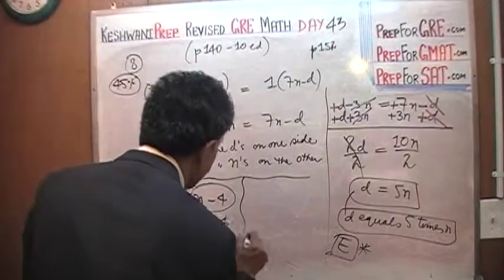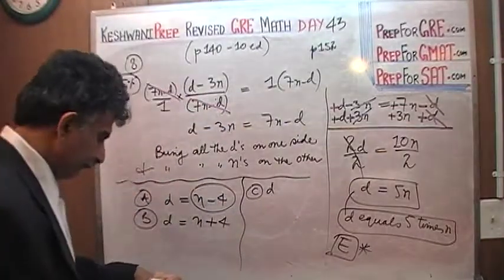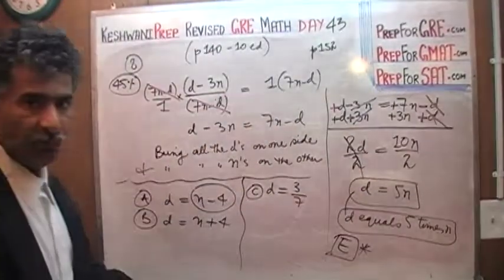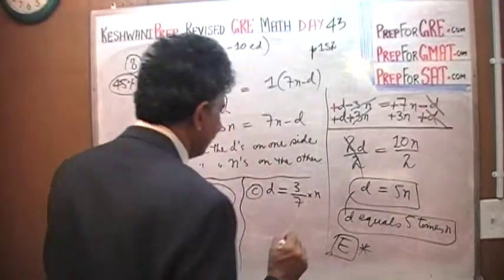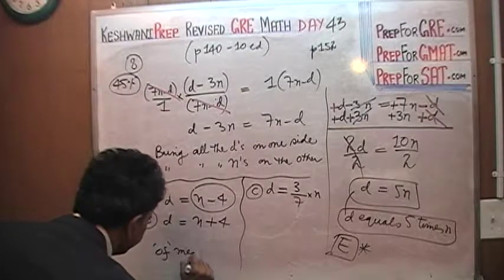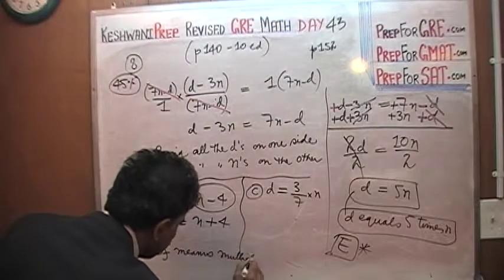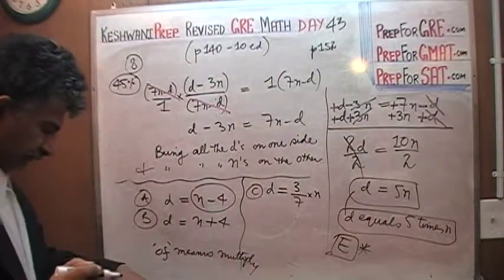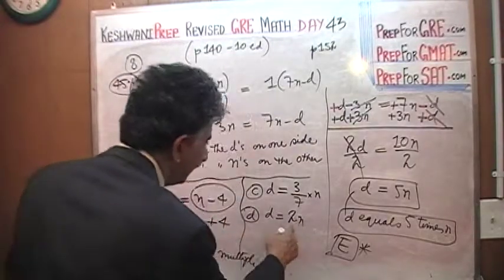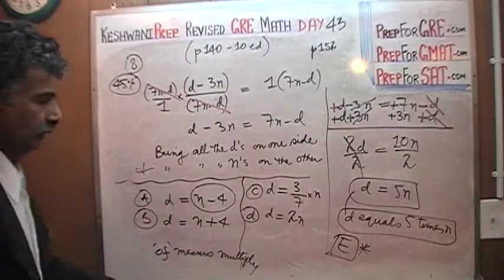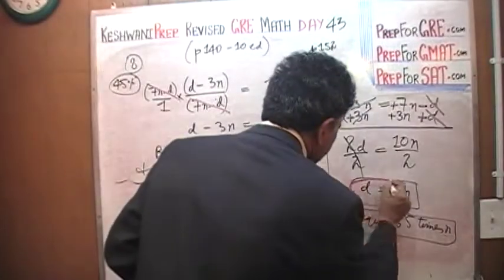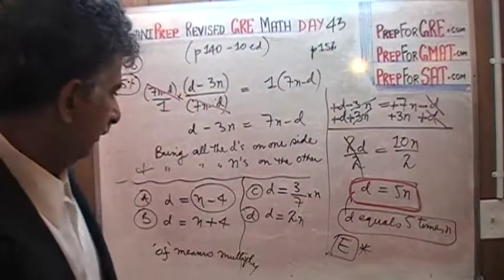C says D is three seventh of, what does of mean? Of means times N. Of means multiply. Let's make a note here: of means multiply. And finally, the last one says D is two times N. No, it's not two times N, it's five times N. All of these are wrong. The correct answer choice is answer E, because that's what we found here. D is five times N.